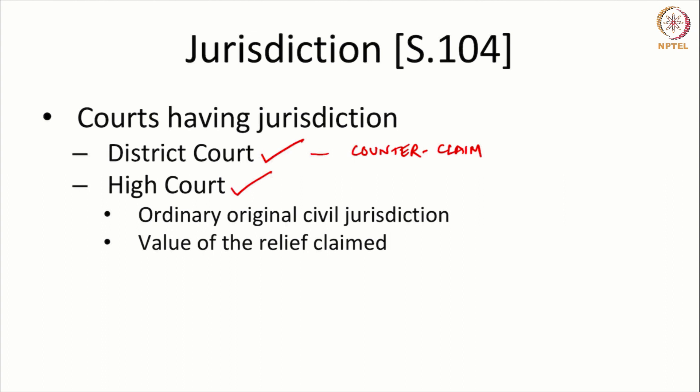When a defendant raises a counter claim of invalidity — stating that the patent is invalid and asking how you can infringe an invalid patent — then the case is transferred to the high court. If a case is filed in the district court and the defendant raises a counter claim of revocation or invalidity, the district court has the power to transfer the case to the high court. As a strategy, it would be better to move directly to the high court, since in most cases it is possible for the defendant to raise a counter claim of invalidity.